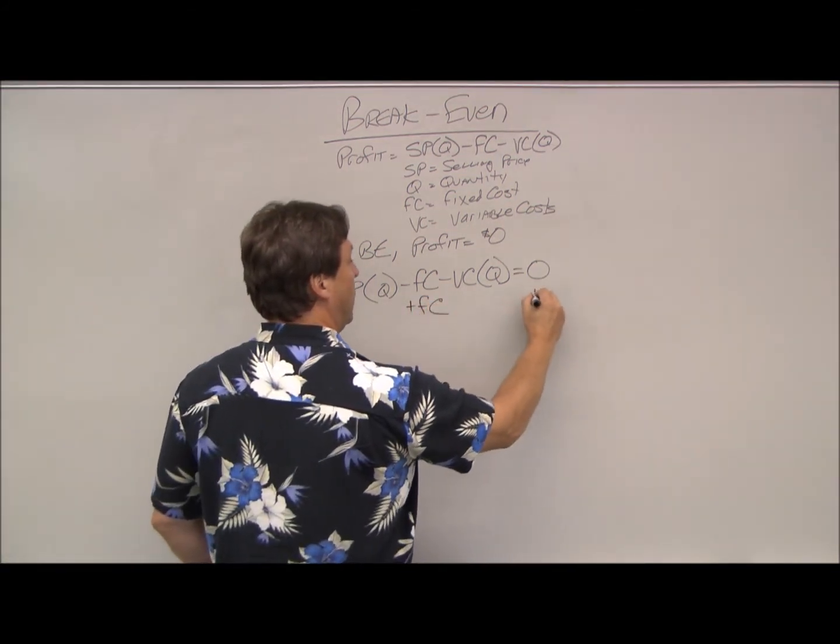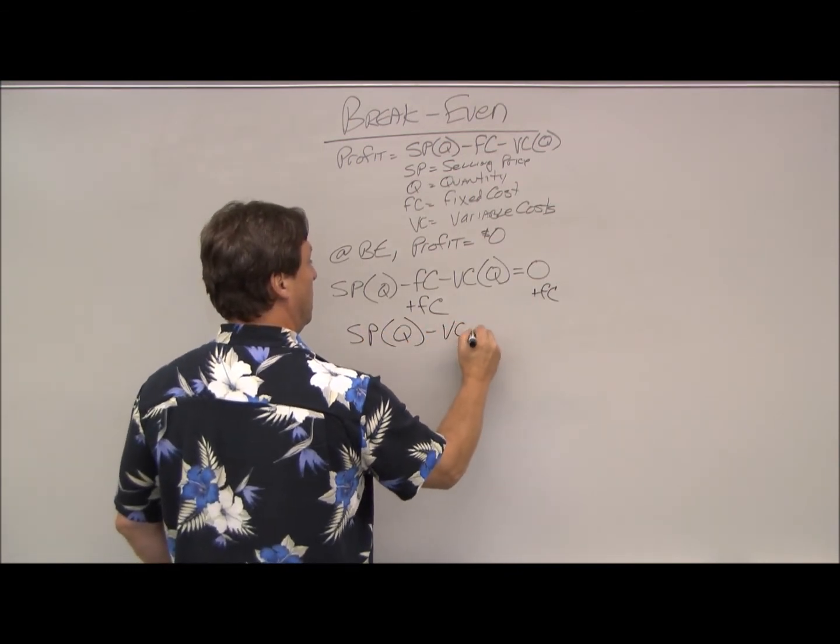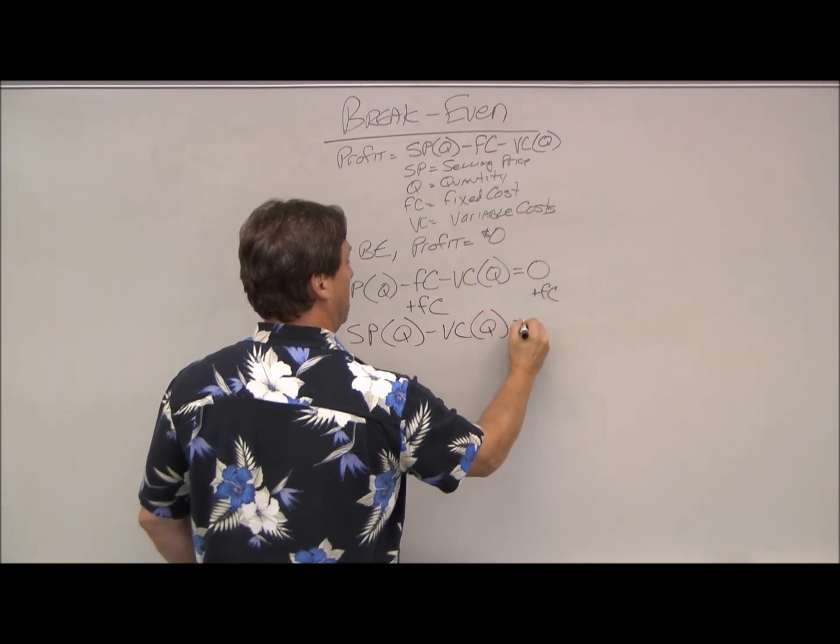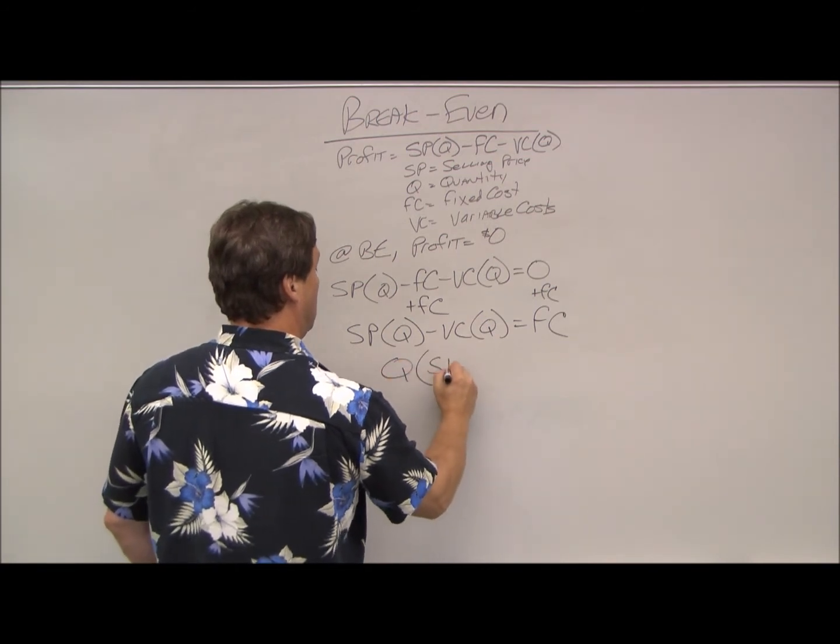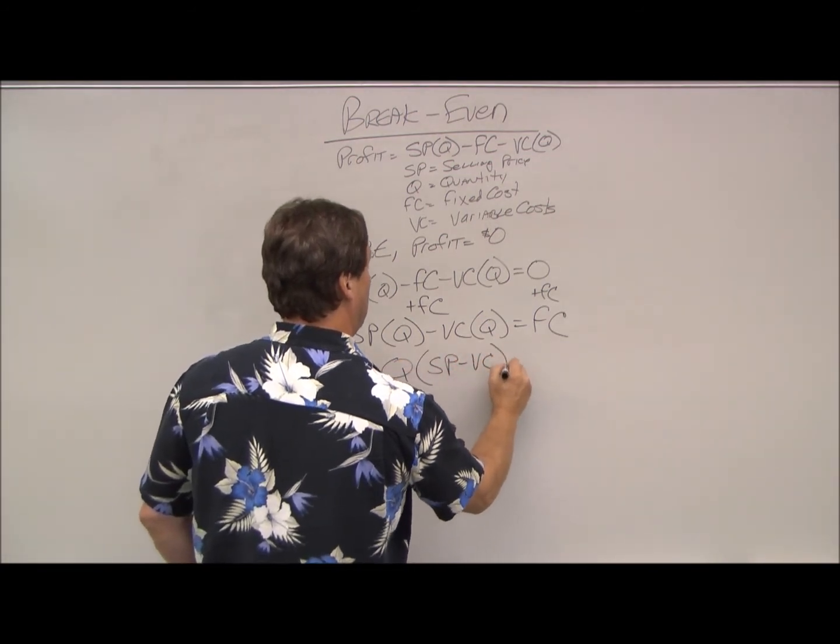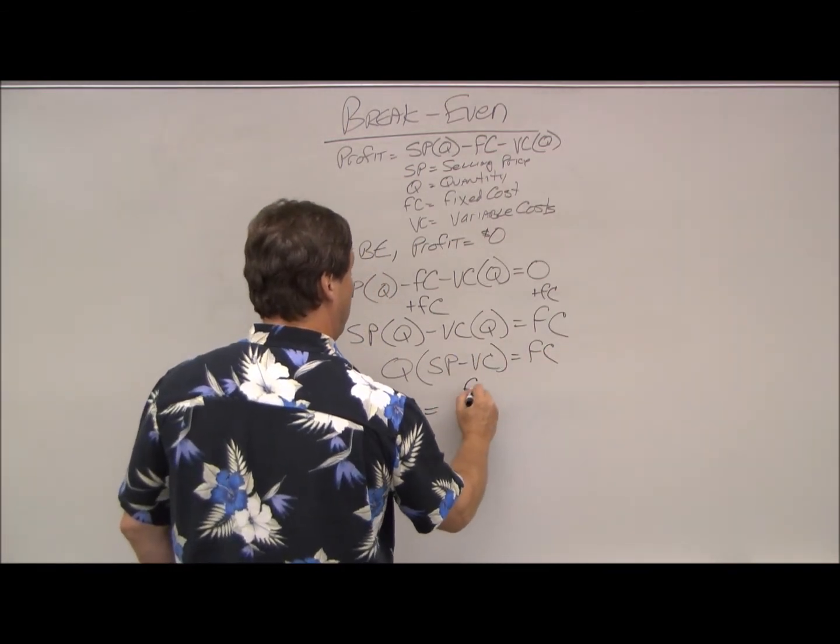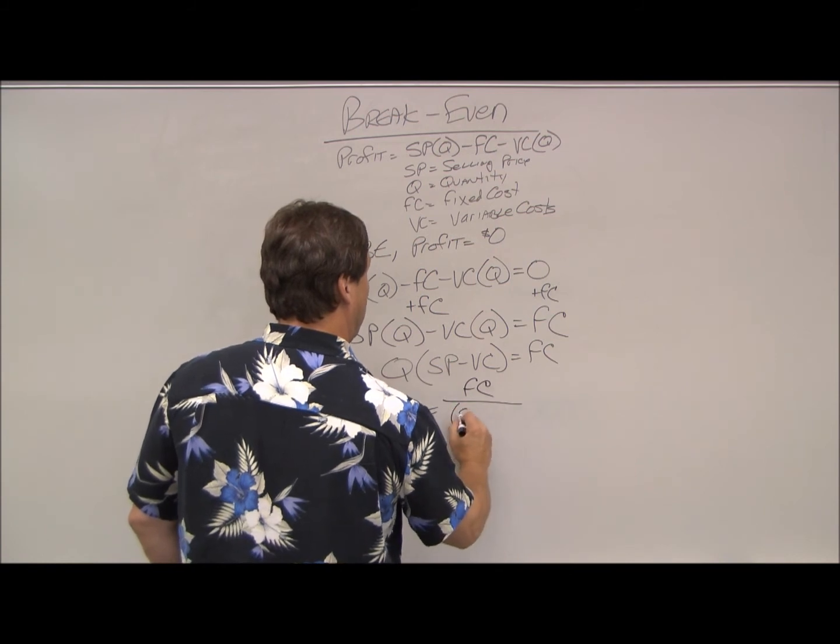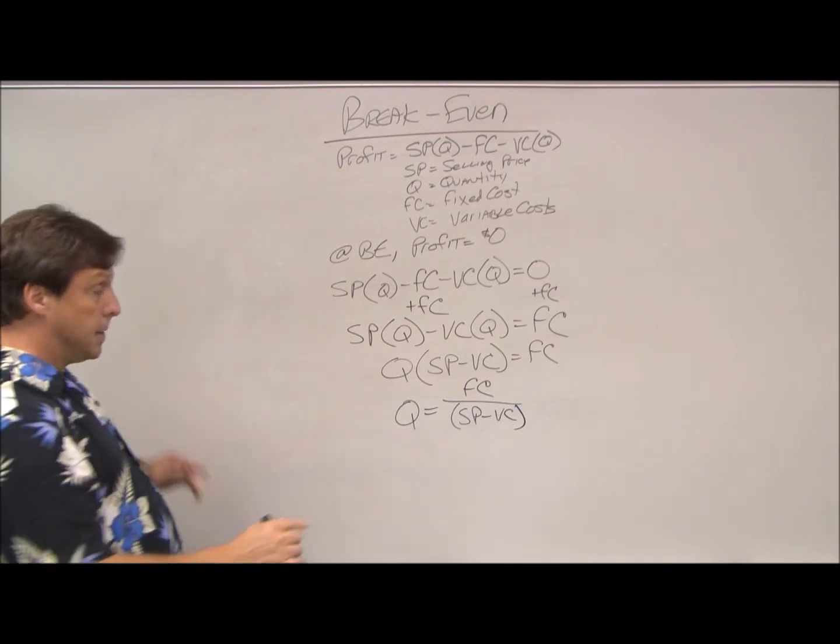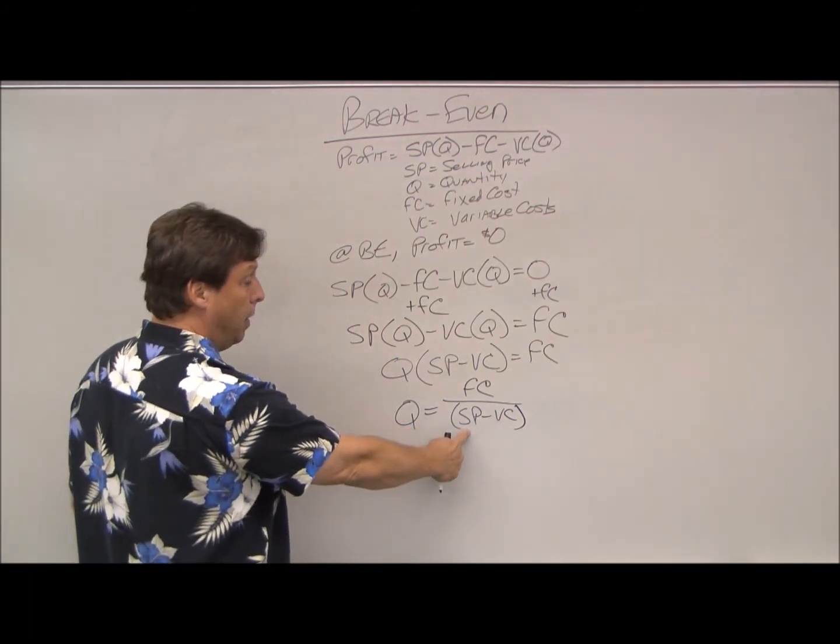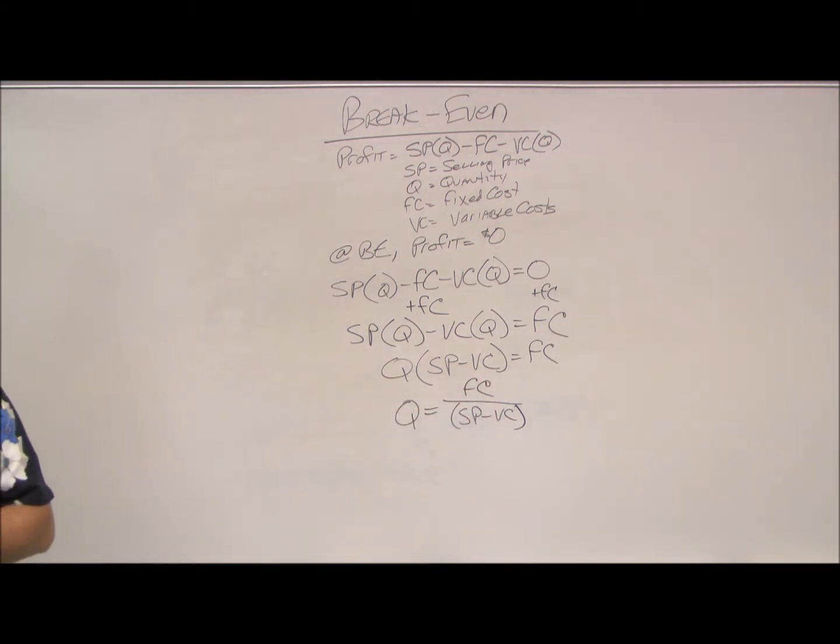I bring my fixed costs over to the other side. I factor out Q. I divide both sides. So Q equals my fixed costs divided by my selling price minus my variable costs. And again, the selling price is per unit. Variable cost is per unit. Fixed costs is your total fixed costs.